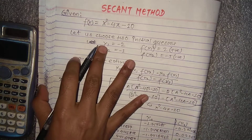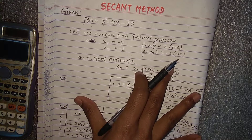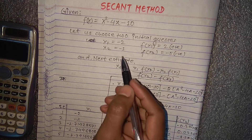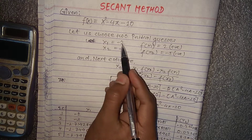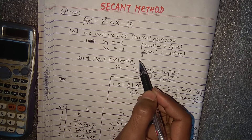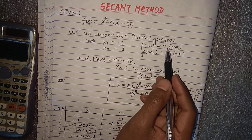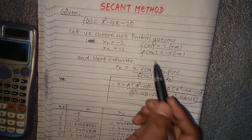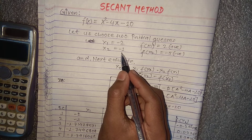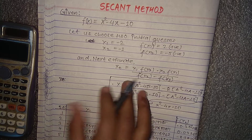Here we have the given function f(x) = x² - 4x - 10. First of all we have to choose two initial guesses: x1 equals minus 2 and x2 equals minus 1. The initial guesses should be chosen such that the functional value of one is positive and the other is negative. In my previous lecture I showed how to choose the initial guess with the help of a calculator, so you can watch that video.